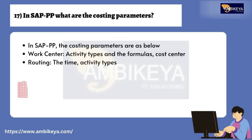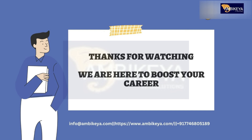Question number seventeen: in SAP PP, what are the costing parameters? The costing parameters in SAP PP are: work center, activity types and the formulas, cost center, routing, and the time activity types. Thanks for watching — we are here to boost your career.